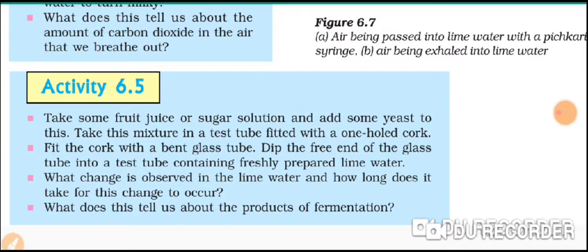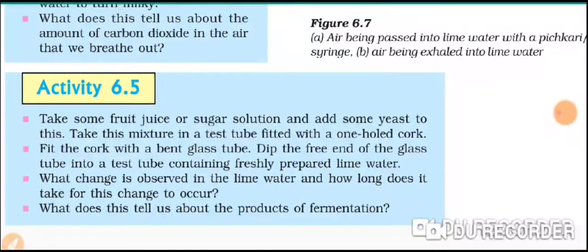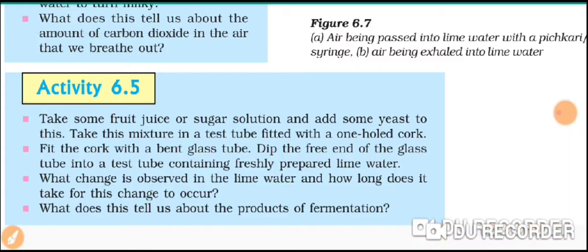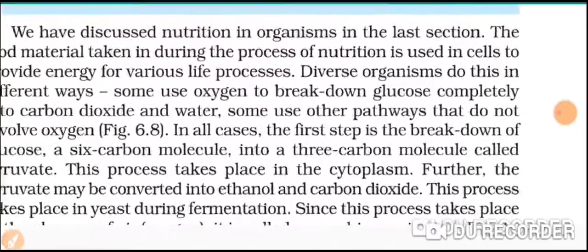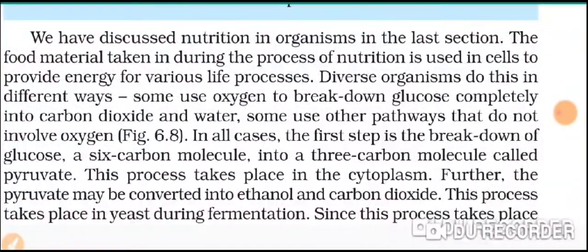One more activity is shown here. You prepare fruit juice or sugar solution and add some yeast to it, then cover that test tube with a cork having one hole through which you pass a bent glass tube. The gas comes out through the glass tube and is passed into lime water, and here also the lime water's color changes — showing that there is a fermentation process.